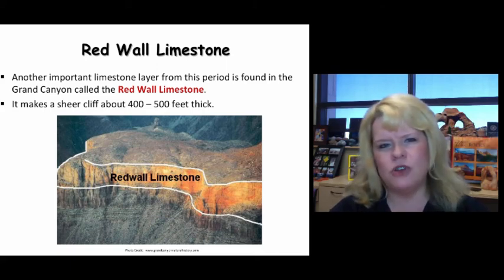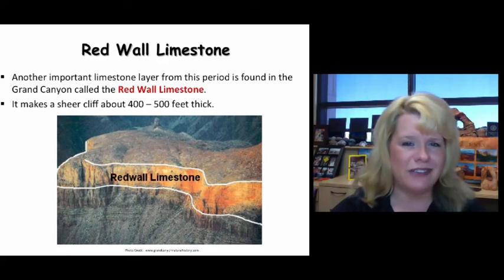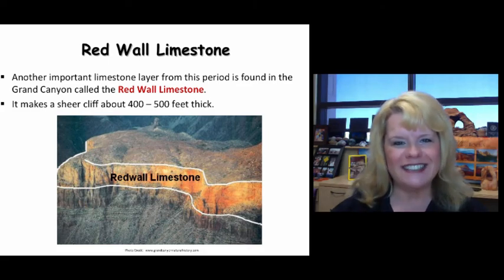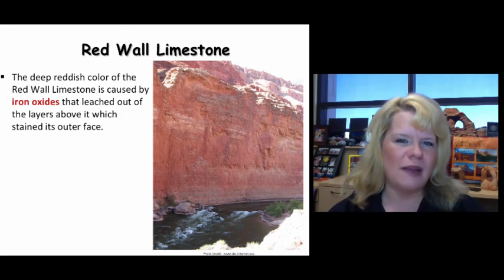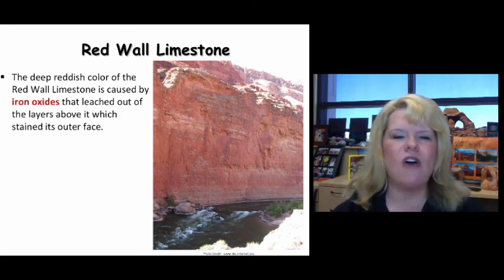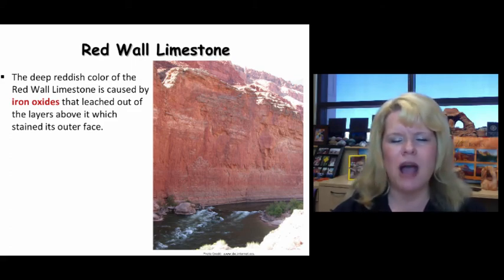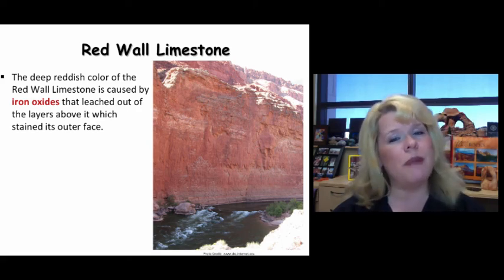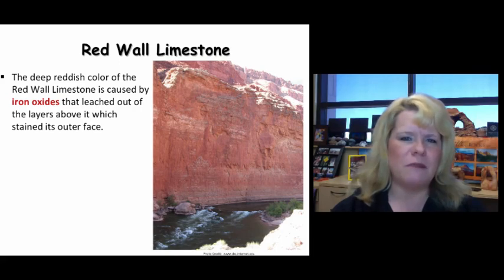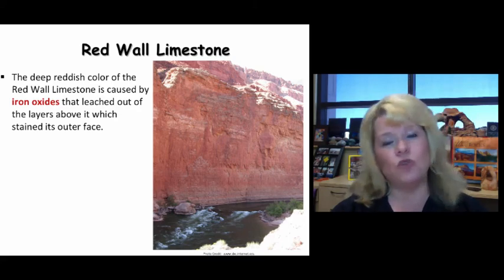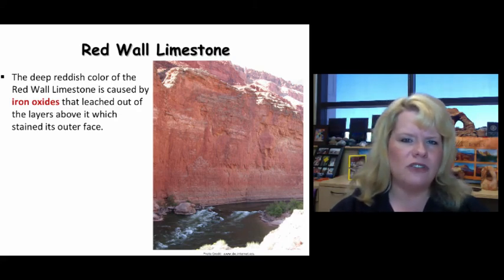Imagine the Redwall Limestone represents that same environment from the same time frame where the Kaskaskia Sea was depositing extensive carbonates throughout the North American craton. The deep red color from the Redwall Limestone is not actually the color of the limestone itself — the limestone is a grayish color inside, but the staining of the outside comes from iron oxides that have leached down through layers above it. Because of how thick it is, it is a notable layer for hiking, telling you about the proximity of where you're located from the rim down to the river.